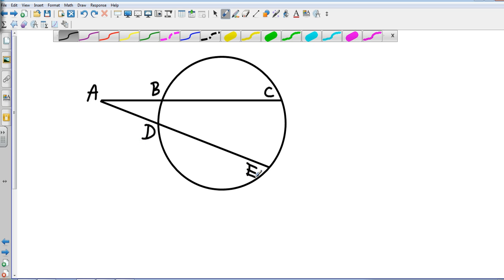For two secants drawn from the same exterior point, this is going to be little section times entire piece is congruent to little section times entire piece. So AB times AC is congruent to AD times AE. And so now let's look at some examples.